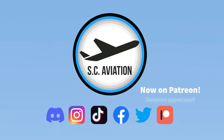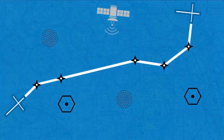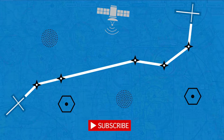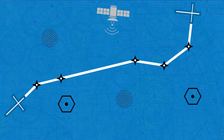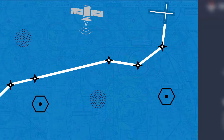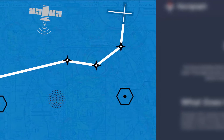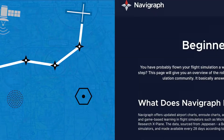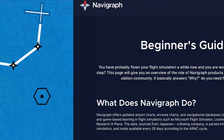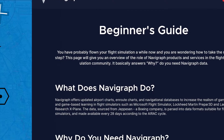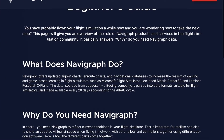When airplanes navigate, they use something called NavAids. These are radio stations or imaginary coordinates that aid with accurate navigation. Now in real life, this navigational data — or nav data — is updated every 28 days, and that's where Navigraph comes to play.